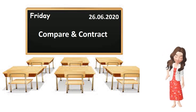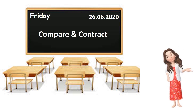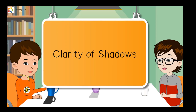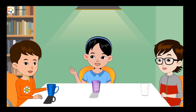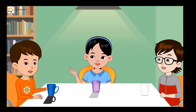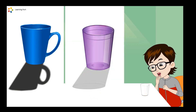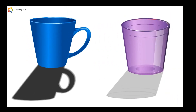Dear students, I hope now you have a clear understanding of the types of objects. Now we are going to discuss which objects form a clear shadow. Lynn, Sarah, and Lana just finished playing and are now going to have a drink. While waiting for Lana's mom to make their juice, Lana observes the different shadows made by the light on the table. Lynn's cup and Sarah's glass have shadows, while her own glass has no shadow. Interestingly, Lynn's cup has a dark shadow, while Sarah's glass has a faint shadow. Why is this so?